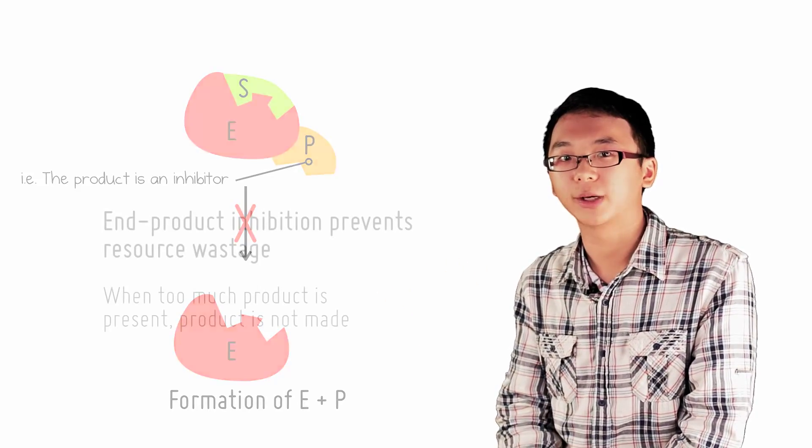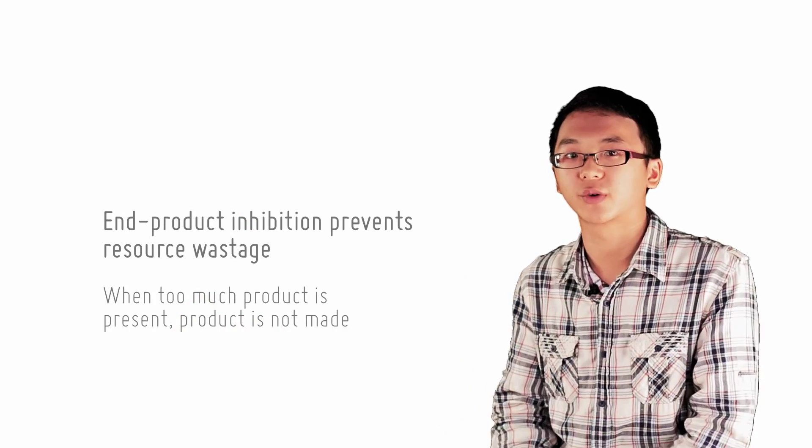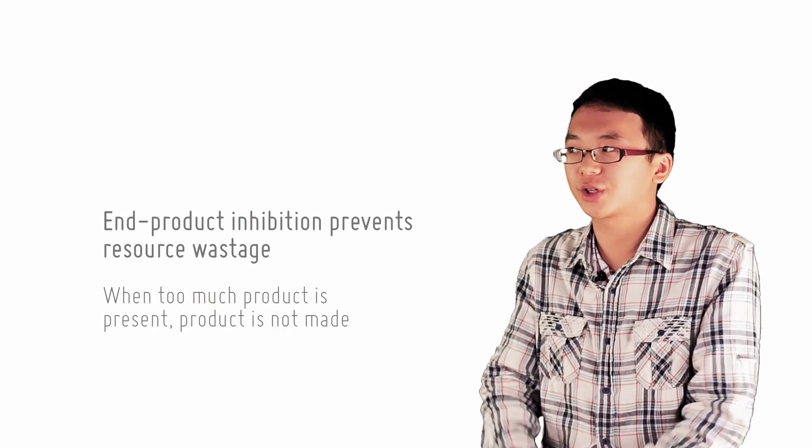Feedback inhibition is important because it prevents the cell from wasting resources for the production of an end-product which is already in excess.